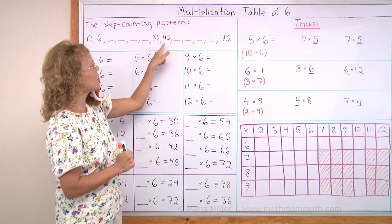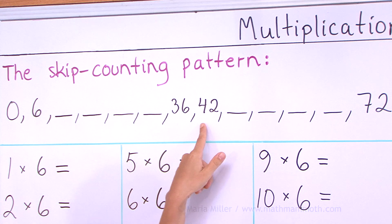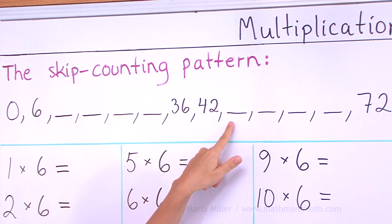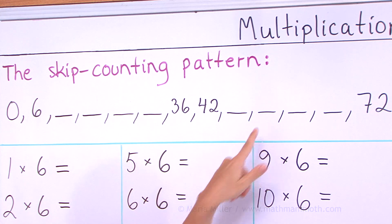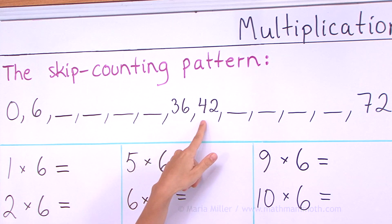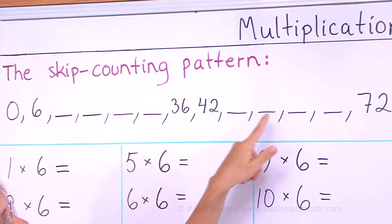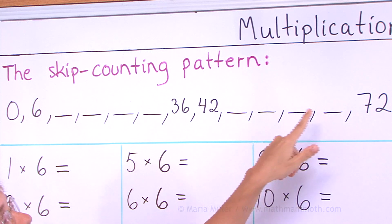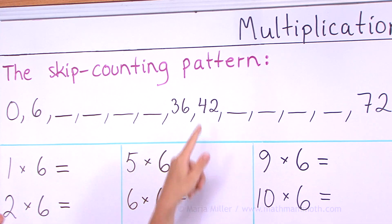And now the latter half, starting with 42. This is the most difficult part of this table — the 42, 48, and 54. That part. 42, 48, 54, 60 — that's the easy number here — 60, 66, and 72. One more time.